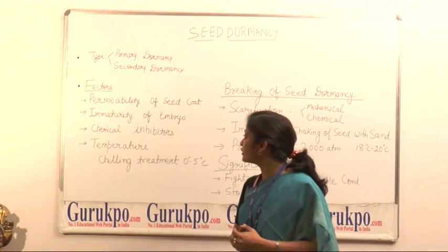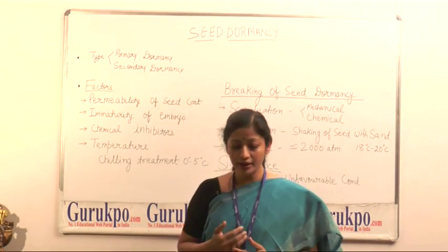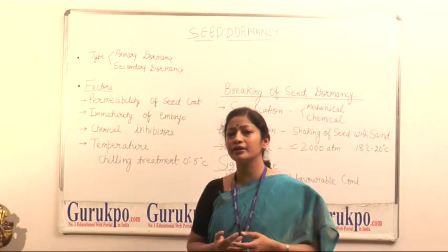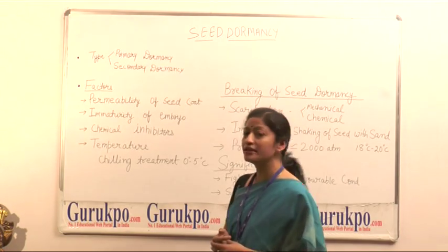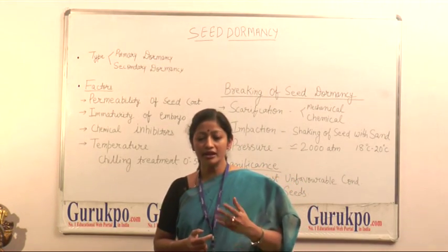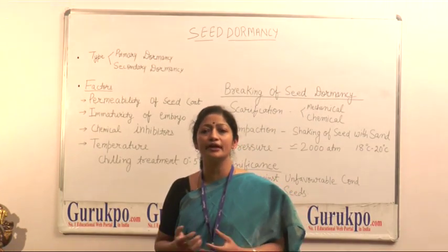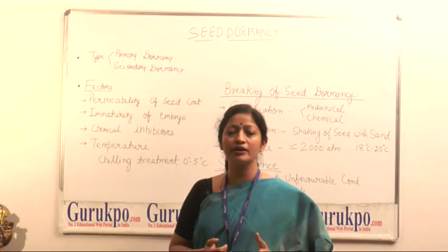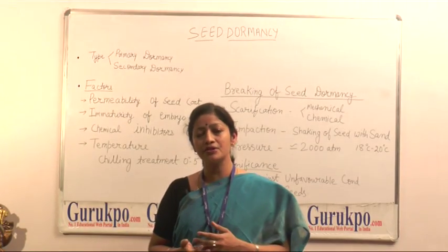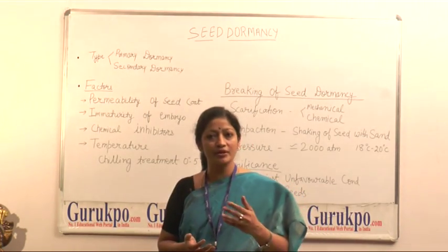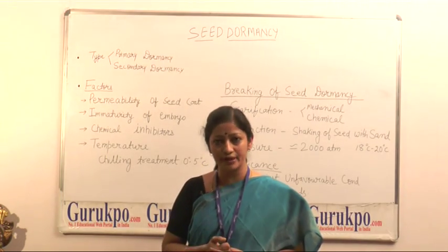Another important factor is the immaturity of embryo. Some seeds develop an immature embryo and they fail to germinate. Another factor is chemical inhibitors. Chemical inhibitors are chemicals which are present inside the seeds, just like the natural inhibitors such as phenolic compounds, alcoholic compounds, and essential oils. These natural chemicals present inside the seeds are responsible for failure of germination.